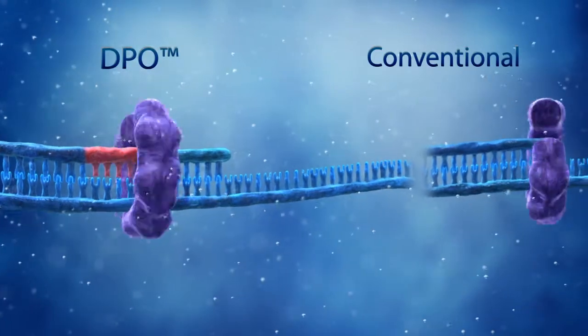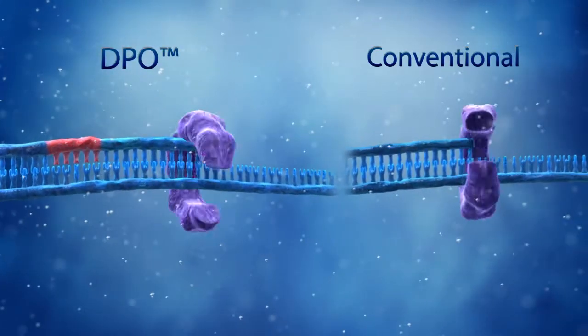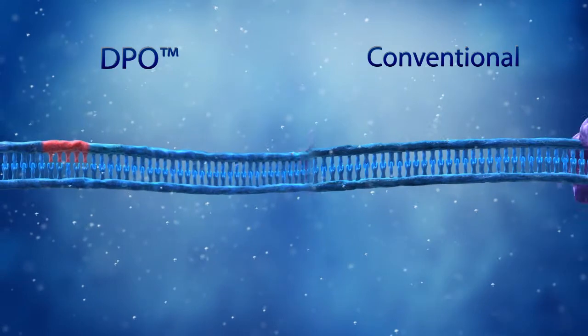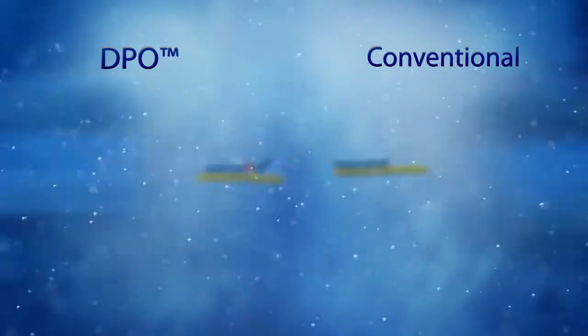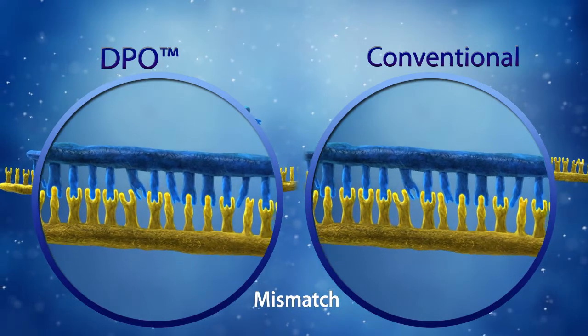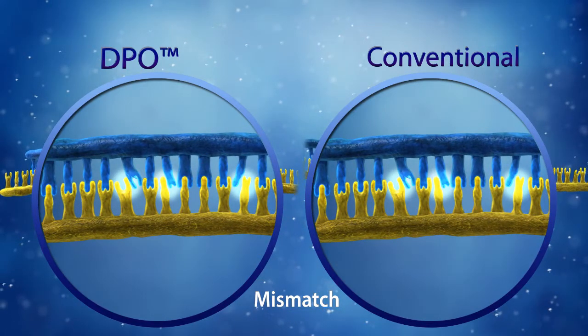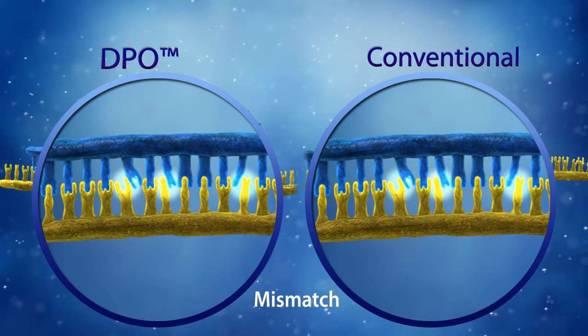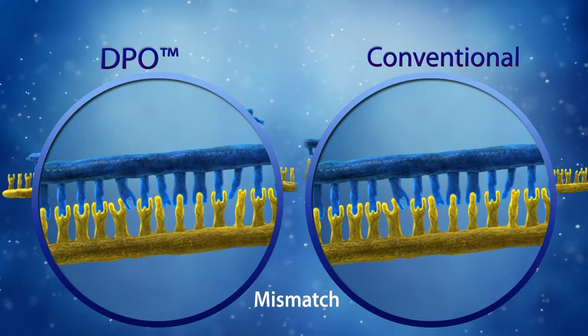Only target specific extension will result from the successful annealing of both the five prime portion and three prime portion of a DPO primer. Although the five prime portion of DPO primer can bind to a non-target sequence, the three prime portion will not bind to a non-target sequence. Therefore, non-target amplification doesn't occur.